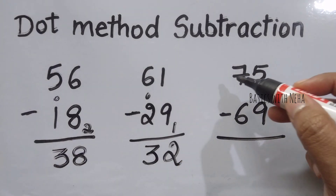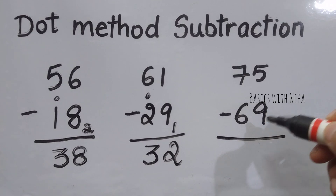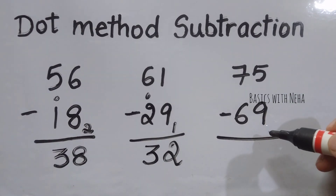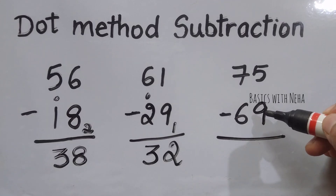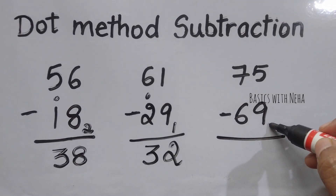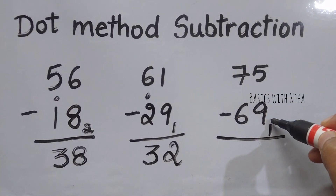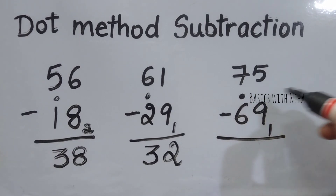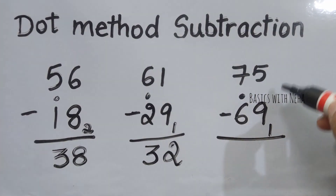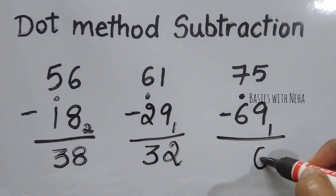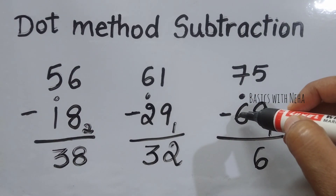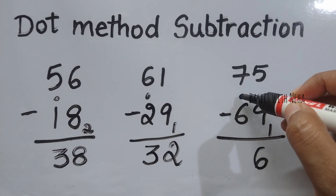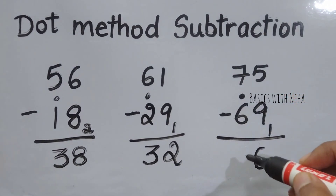The next sum: 75 minus 69. The minuend is smaller than the subtraction, so I'm going to use the complement method. The complement for 9 on base 10 will give me 1. Since I've used the complement method, I'm going to put a dot here. 5 plus 1 will give me 6. Since the minuend is larger than the subtraction, I'm going to consider this dot to be 1, so 6 plus 1 is 7, and 7 minus 7 will give me 0.